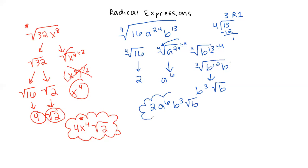To check this one, you would have to pick numbers to substitute in for a and b, then check in the original versus the answer to see if it gives you the same result. To recap: break it into its components. If it simplifies evenly, simplify it. If it doesn't — like b to the 13th when taking the fourth root — get it as close as possible and whatever your remainder is would be left under the root.